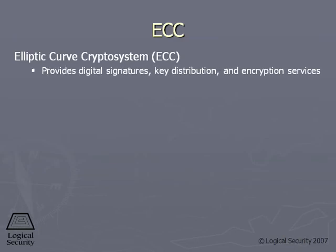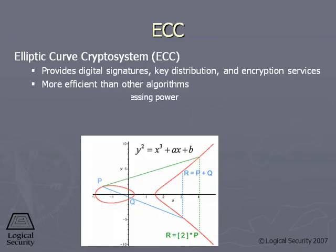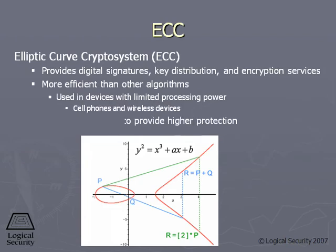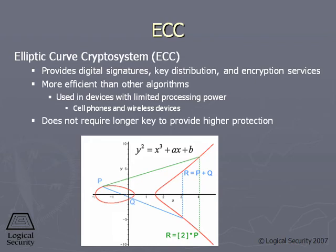Another algorithm that's a little bit newer is called ECC, Elliptical Curve Crypto System. What makes ECC different from the other asymmetric algorithms is it uses a different type of mathematics that's not as complex. Basically, on elliptical curves, it takes points and uses those in its mathematical equations to do the encryption.